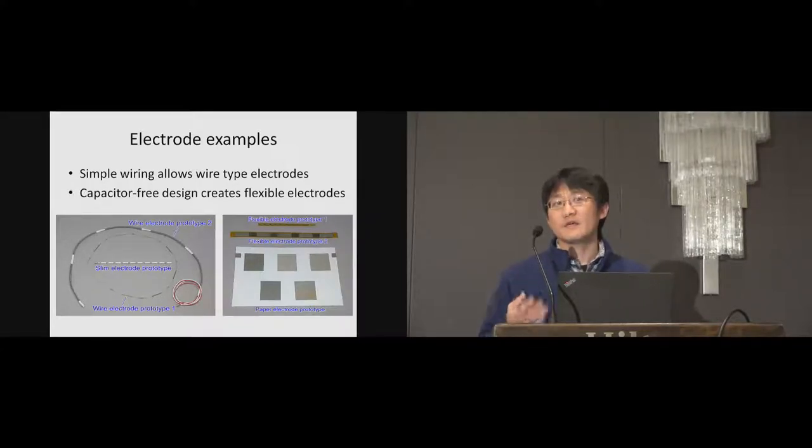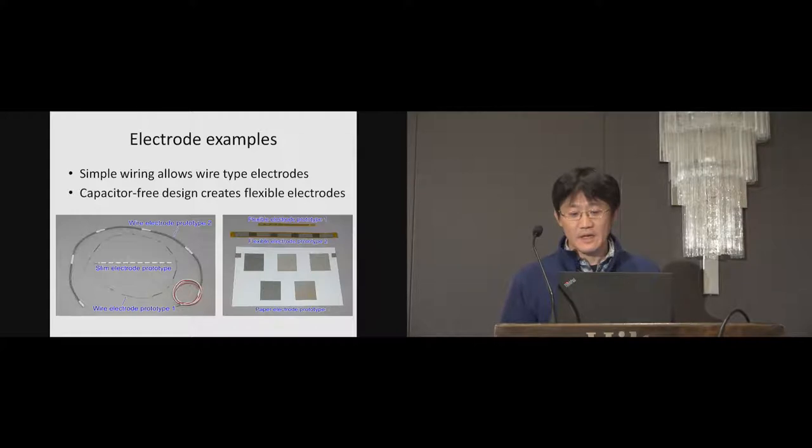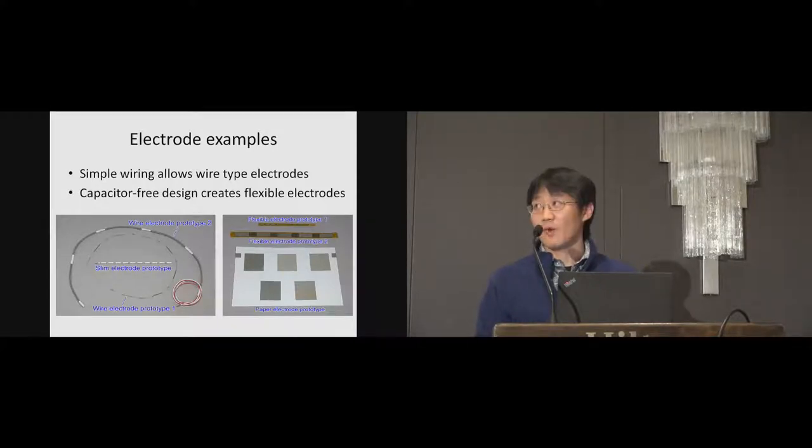When a thin insulating film is used, smaller electrodes are possible, like flexible electrode prototype two. When much smaller electrodes are needed, FPC and capacitors can be used, like flexible electrode prototype one.